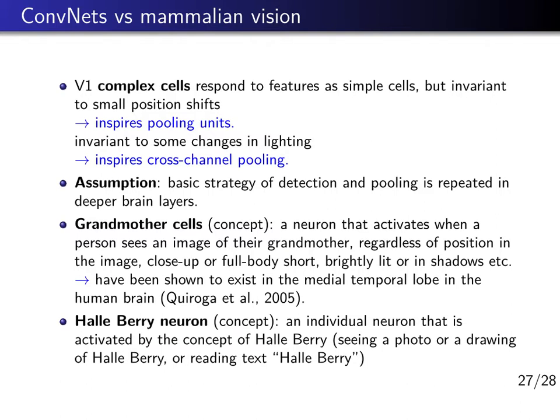Neuroscientists and machine learners clearly have a lot of time to think about exotic examples. The relevance of having individual neurons for specific high-level concepts is not really very clear — there is some evidence for it, but there is also evidence that complex objects or concepts are stored in a distributed fashion.